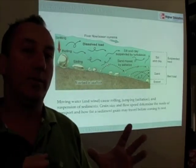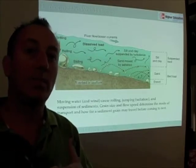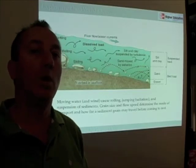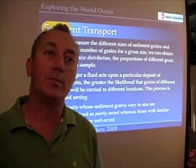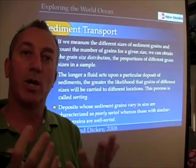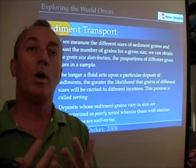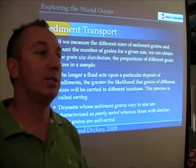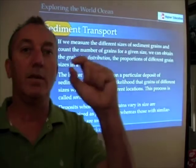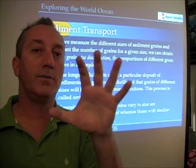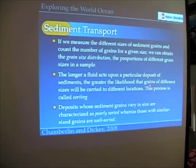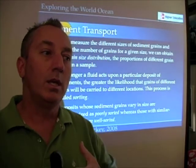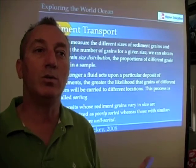The sorting of sediment samples — or how well sorted sediment samples are — tells us something about how long they spent in a given fluid flow, whether that flow was water or wind. So if we look at a sample of sediments, we can ask: are the sediment grains all of the same size, or are they of different sizes? What is the distribution of sizes in that sample? That's something we call the grain size distribution. The longer the fluid acts, the greater the likelihood that grains of different sizes are going to be carried to different locations. That process by which water and wind separate particles according to their size is called sorting.